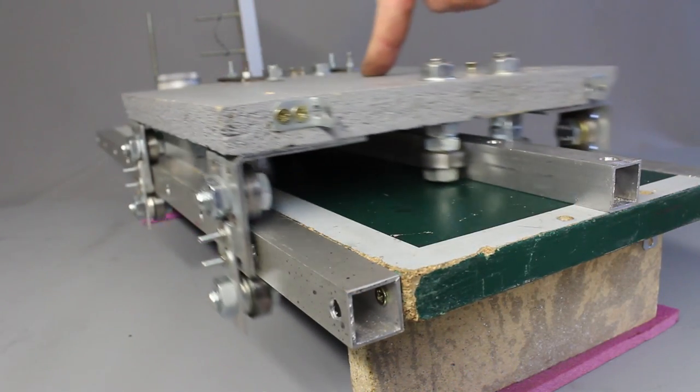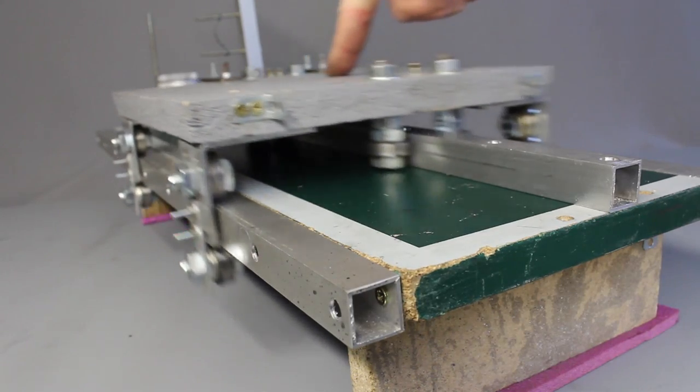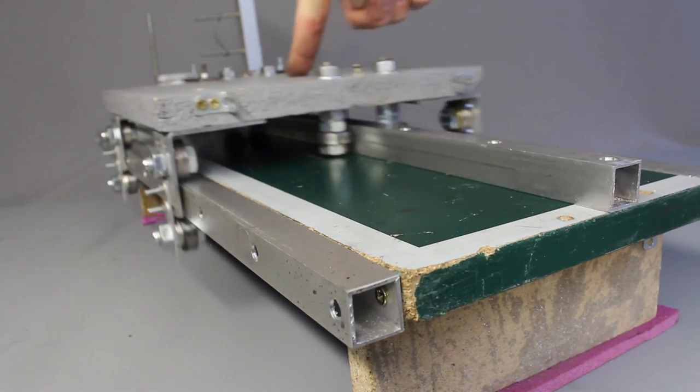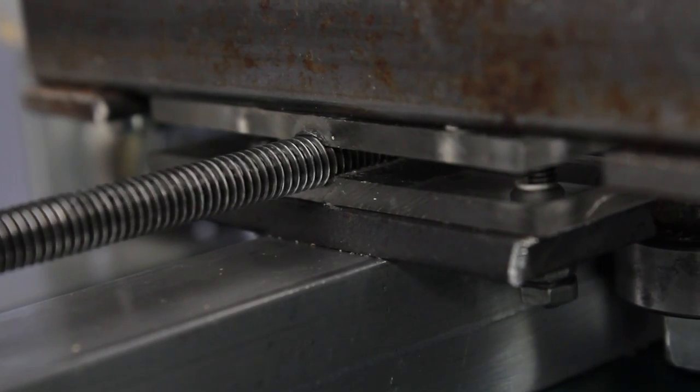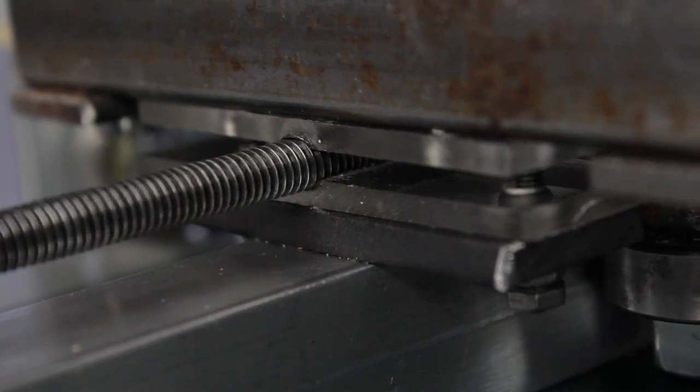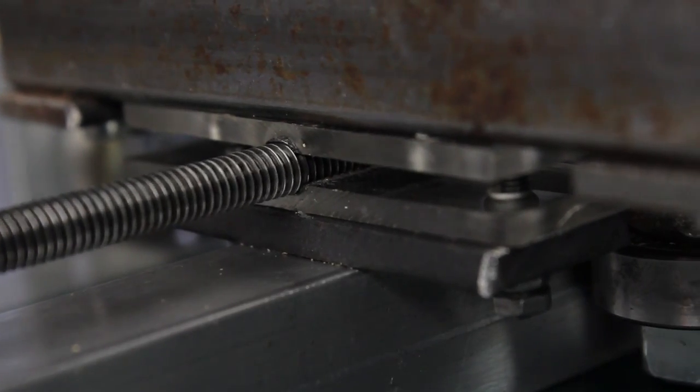The carriage is guided by 12 ball bearings with dimensions 10 times 26 times 8mm. The rotational movement of the electric motor is transformed into linear movement through a 6mm threaded rod.